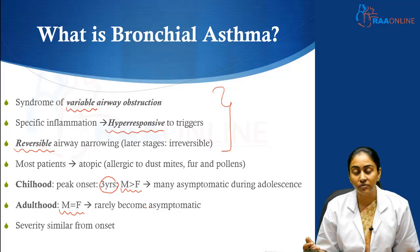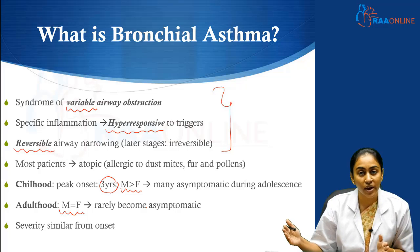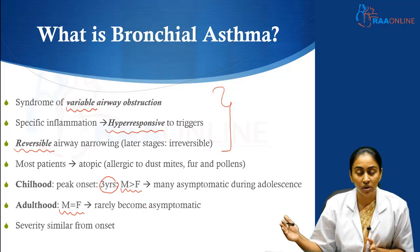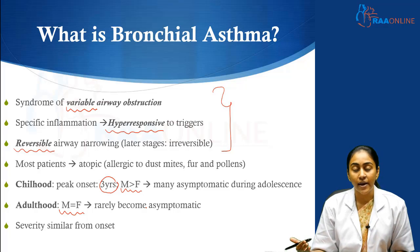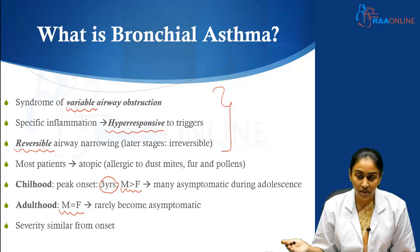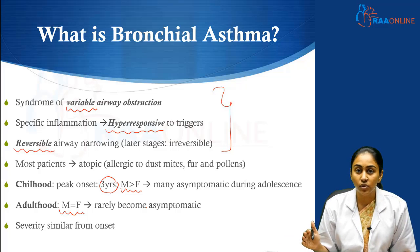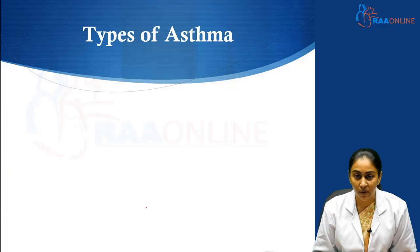What does this mean? If at the outset the patient starts off having severe asthma, they are going to end up having severe asthma throughout the course. Similarly, if a patient has mild asthma, as the years pass by it may not increase in severity — the severity is going to remain similar to the onset throughout the natural course of bronchial asthma.